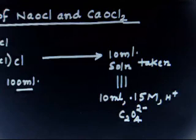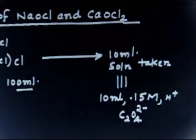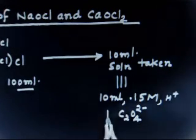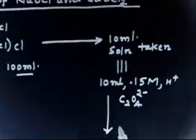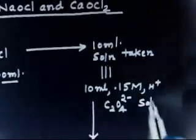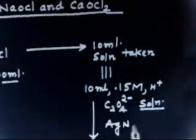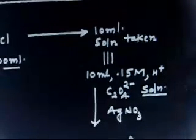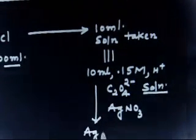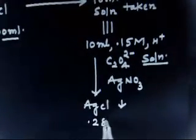After titration, a clear solution is obtained. This solution is then treated with excess AgNO₃, which gives AgCl as a precipitate. The weight of the AgCl precipitate is 0.287g.